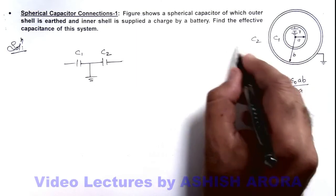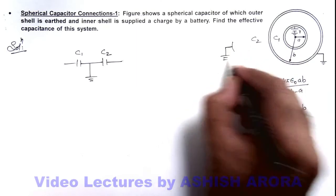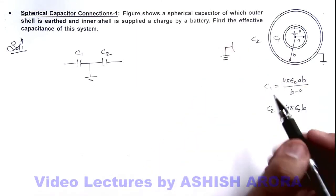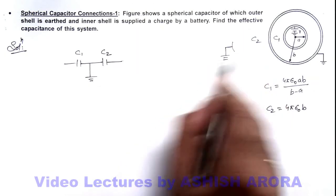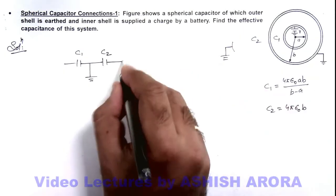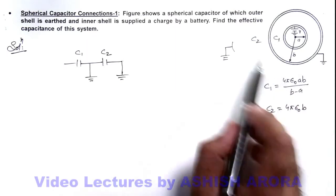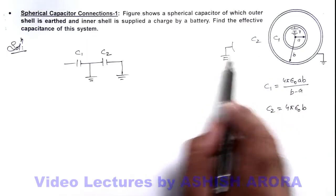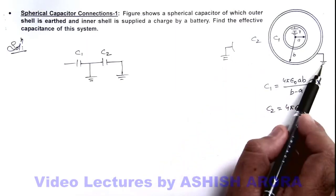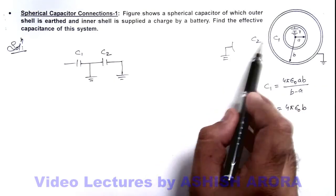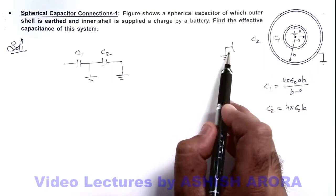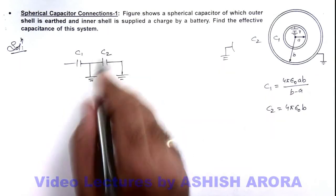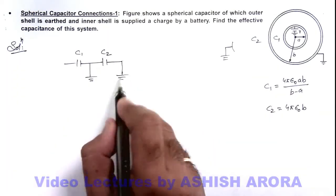C2 outer plate can assume to be connected to earth because the outer plate of this C2 is always at infinity. So the potential across C2 will always remain zero because for earth we assume potential is zero and for infinity it is also as reference zero. So C2 will never receive any charge or it can be considered as short circuited.